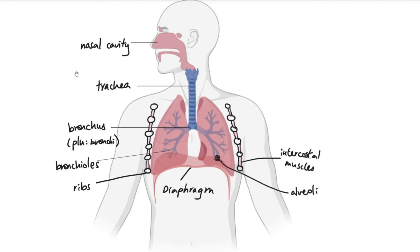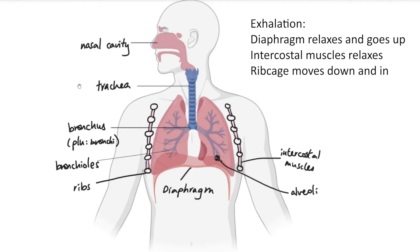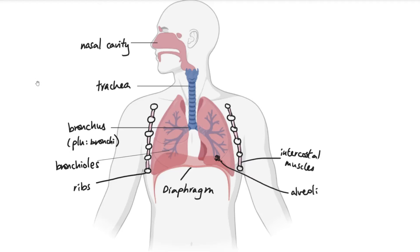And in exhalation, the opposite happens. The diaphragm relaxes, comes back up into a dome shape, like you can see in this picture here. Intercostal muscles relax, the rib cage goes down and in. That reduces the chest cavity volume, increases the chest pressure, so that the air flows from inside the lungs, which is high pressure, out of the body, which is a lower pressure. So that's the exhalation process.